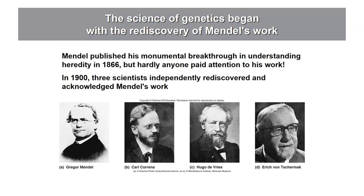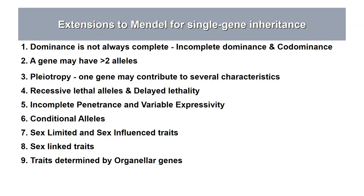After its rediscovery, many people took to looking at the rules of inheritance in various different types of organisms and found that they mostly supported what Mendel found, but also there were extensions of things he didn't observe. These extensions are what we're talking about, and there's a list on the next slide. I'm going to break this down into two main types: extensions for traits determined by a single gene, and extensions for traits determined by two genes.